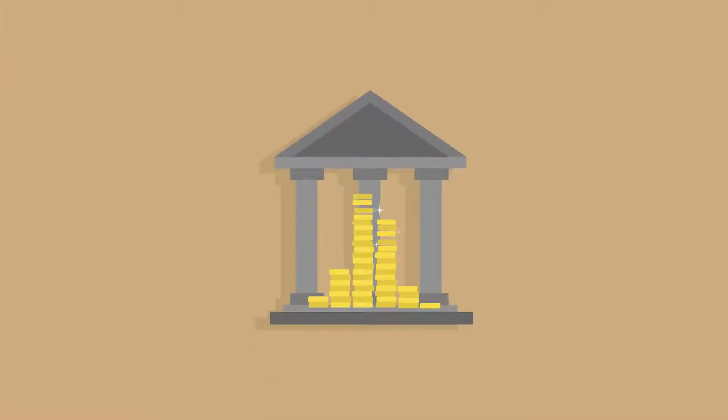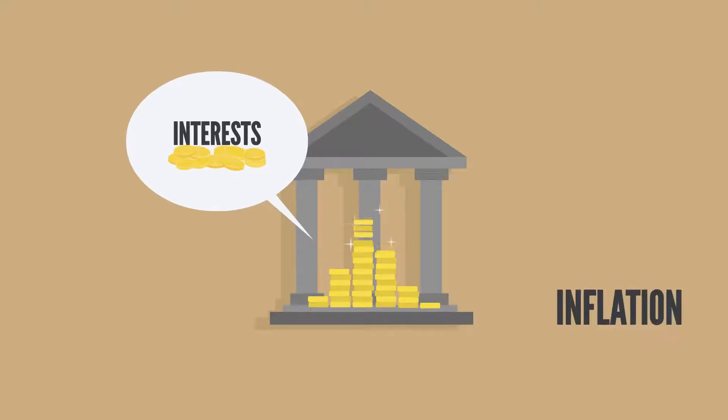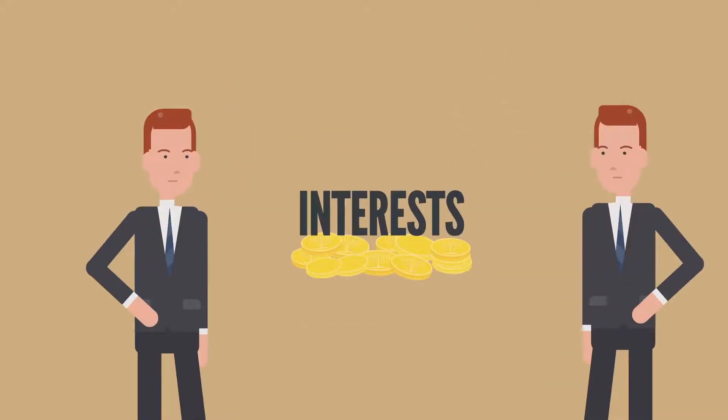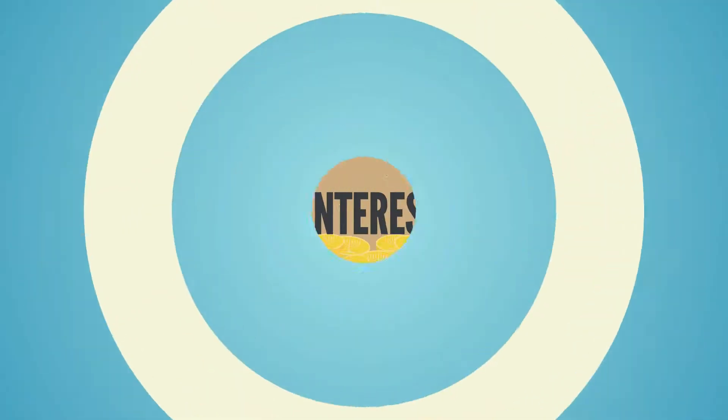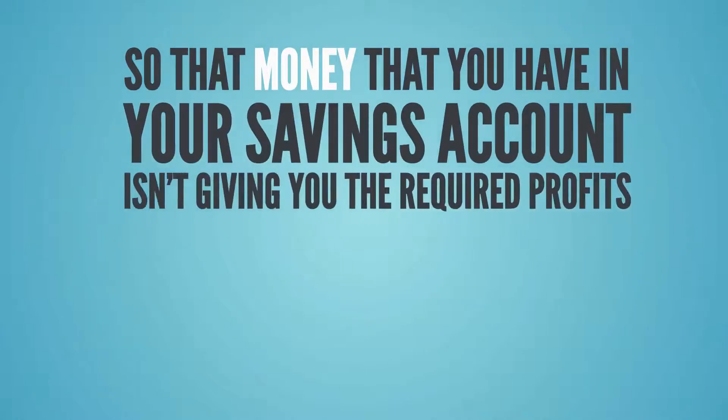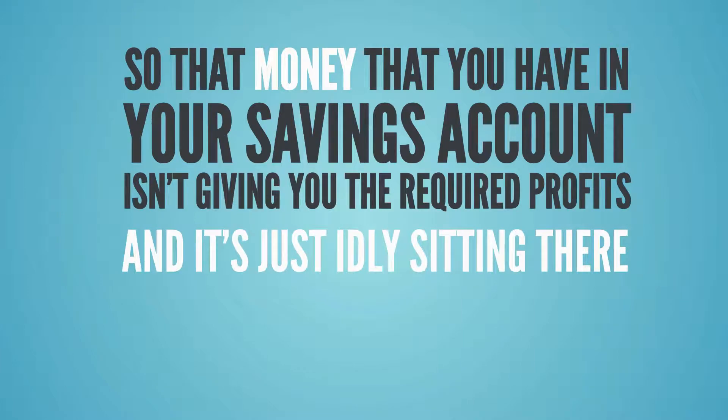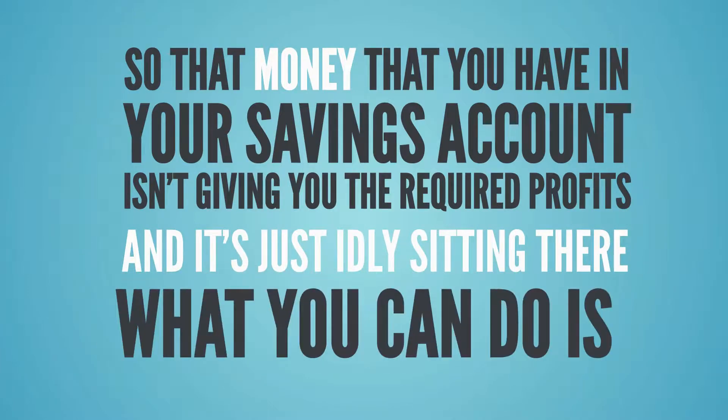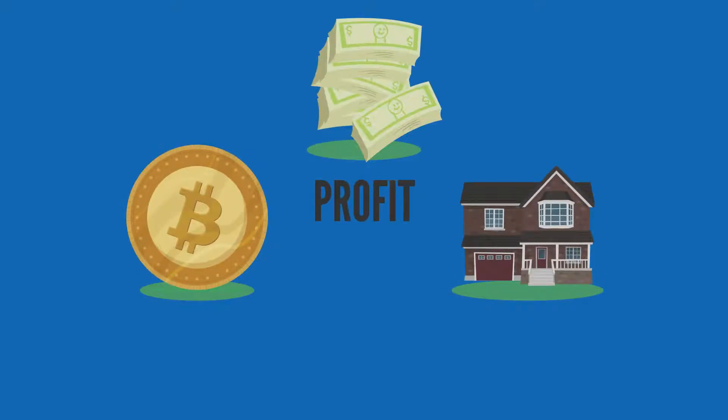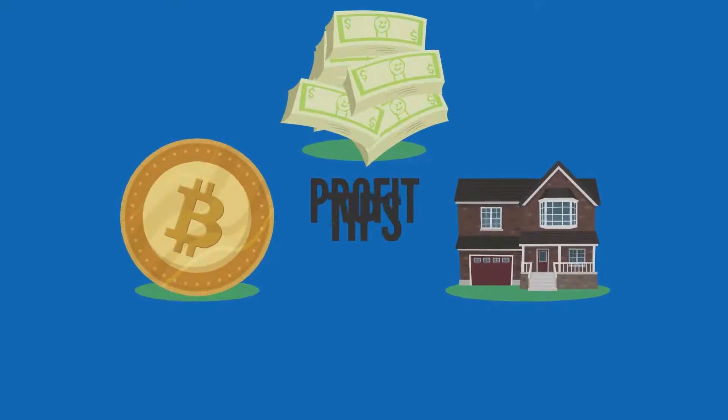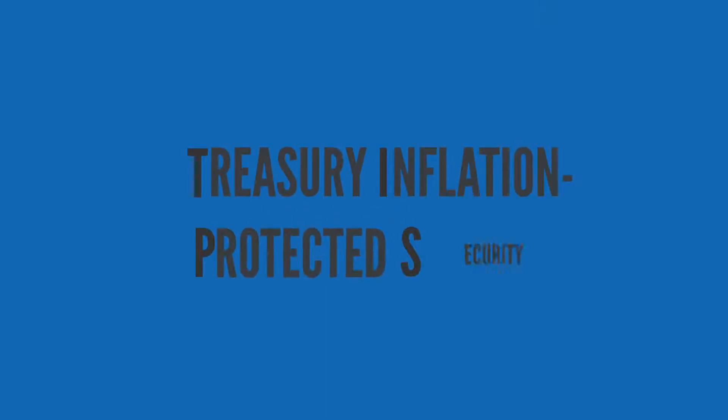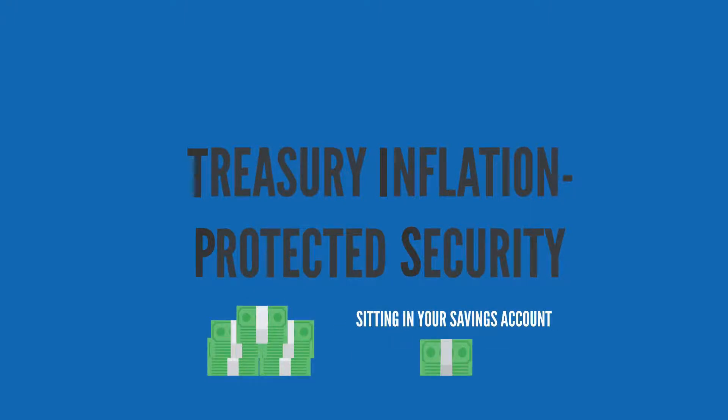How and why? Alright, so when we save our money in bank accounts expecting interest on them, during inflation these interests get low as well. So you're not earning as much as you're spending if we only talk about interest. So that money that you have in your savings account isn't giving you the required profits and it's just idly sitting there. What you can do is take it out and invest it. Investing in things and goods that are more likely to give profits during inflation is key here. These include treasury inflation protective security bonds.